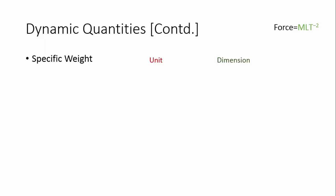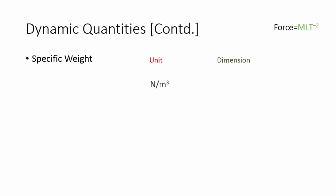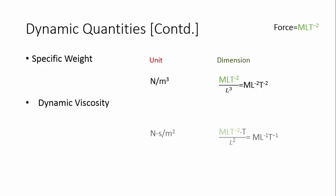Here we have some quantities which are dependent on force, so I have kept the unit of force on the right-hand side: M·L·T to the power minus 2. The unit of specific weight is Newton per meter cubed, so Newton is M·L·T to the power minus 2 divided by L cubed; the L terms cancel, giving M·L to the power minus 2·T to the power minus 2. For dynamic viscosity, the unit is Newton·second per meter squared: Newton times second T divided by meter squared L squared.